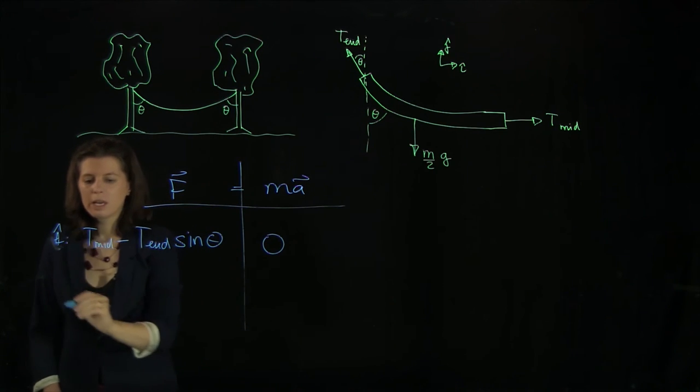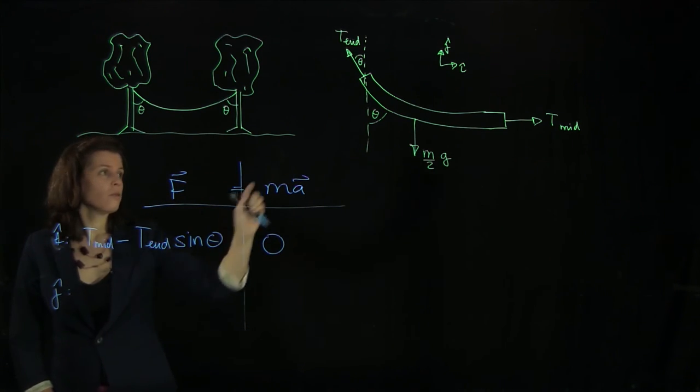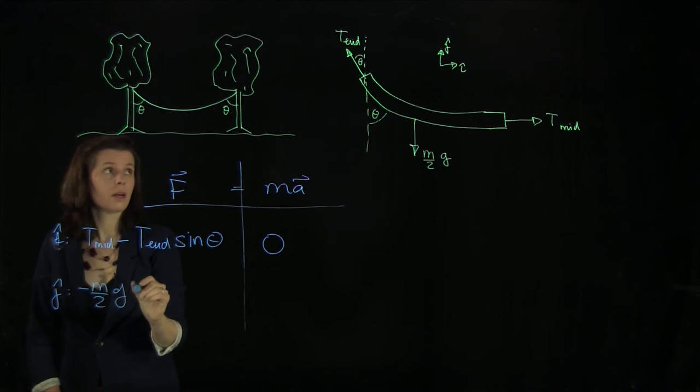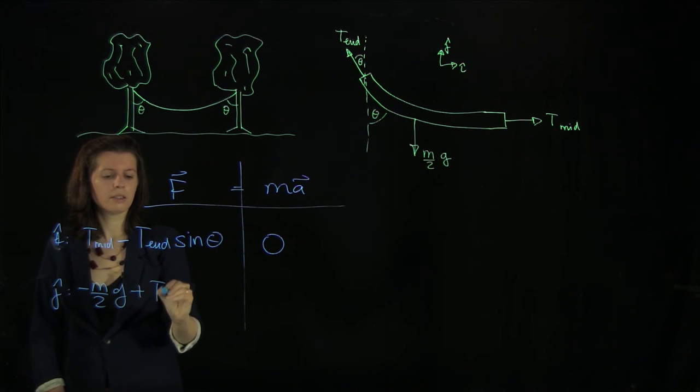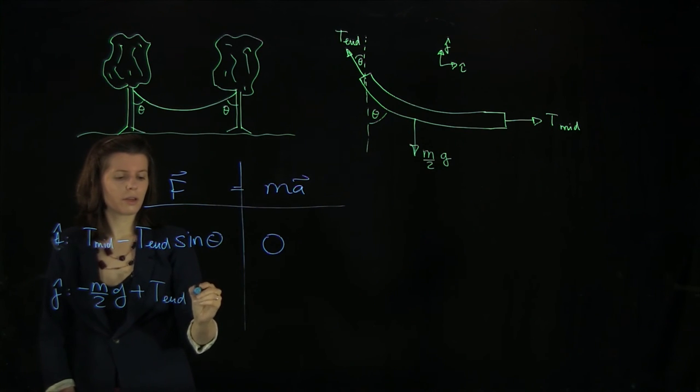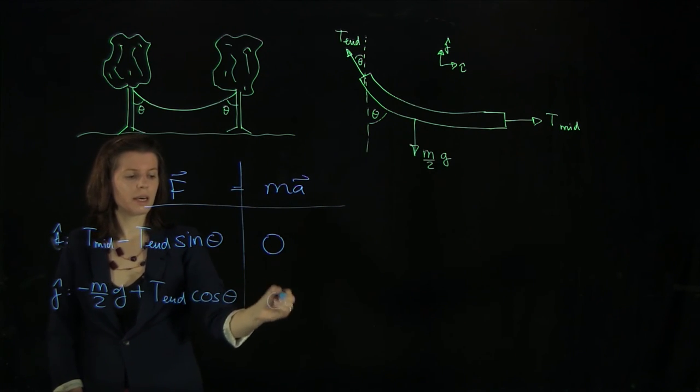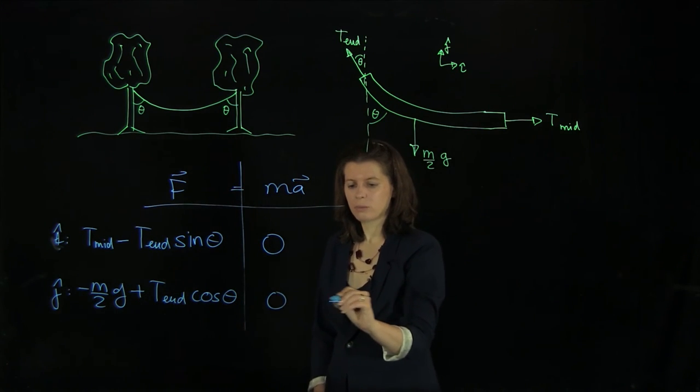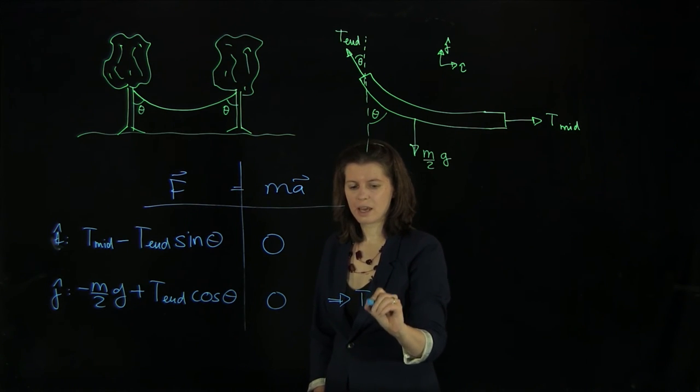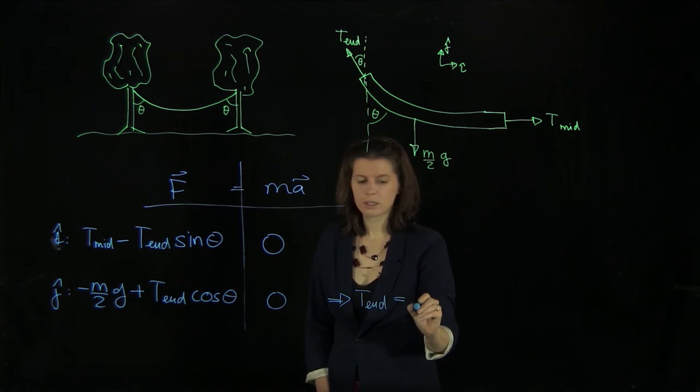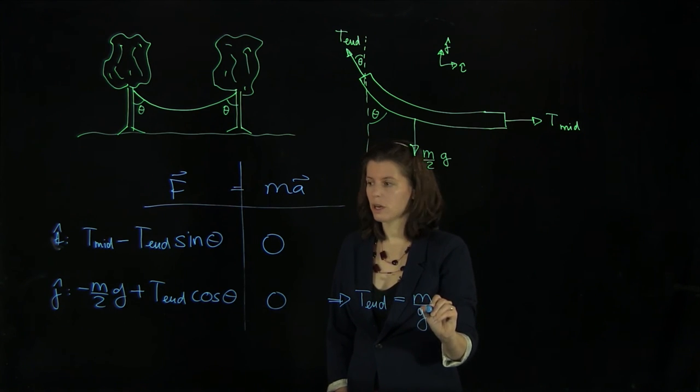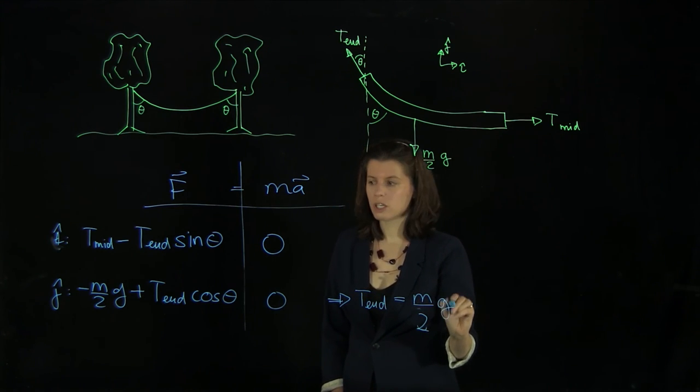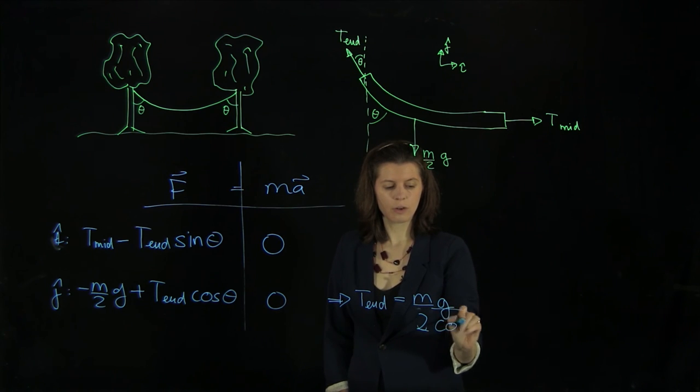In the j hat direction, we have minus m half g and then plus T end. And here we have the cos theta component. And that is also 0. So we see from here pretty much immediately that T end equals m half g over cos theta.